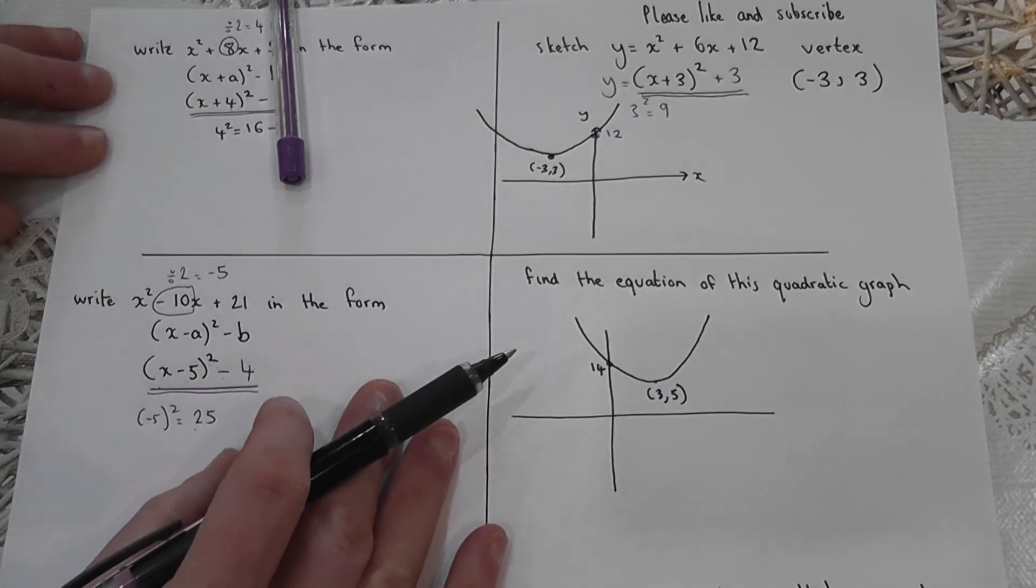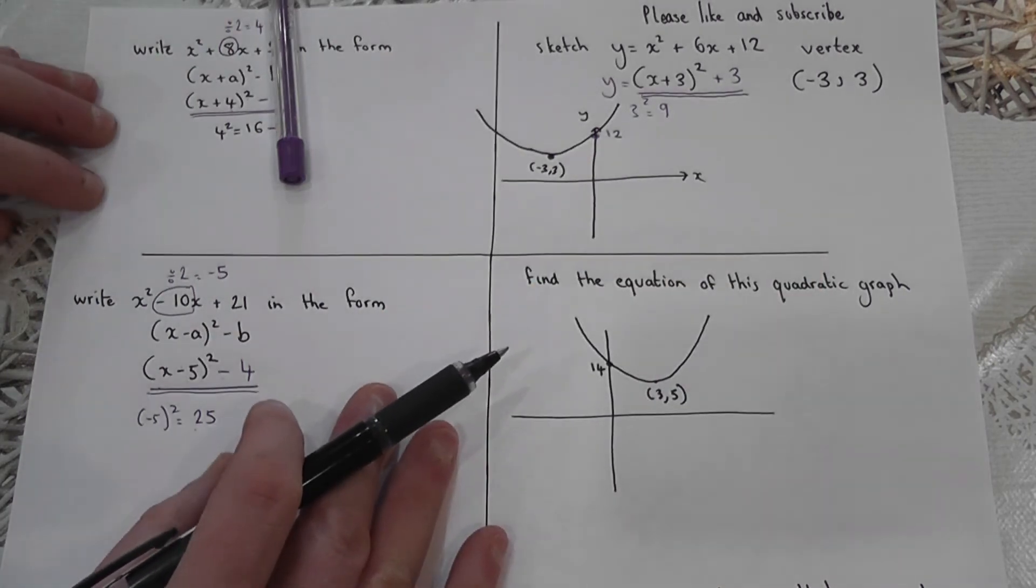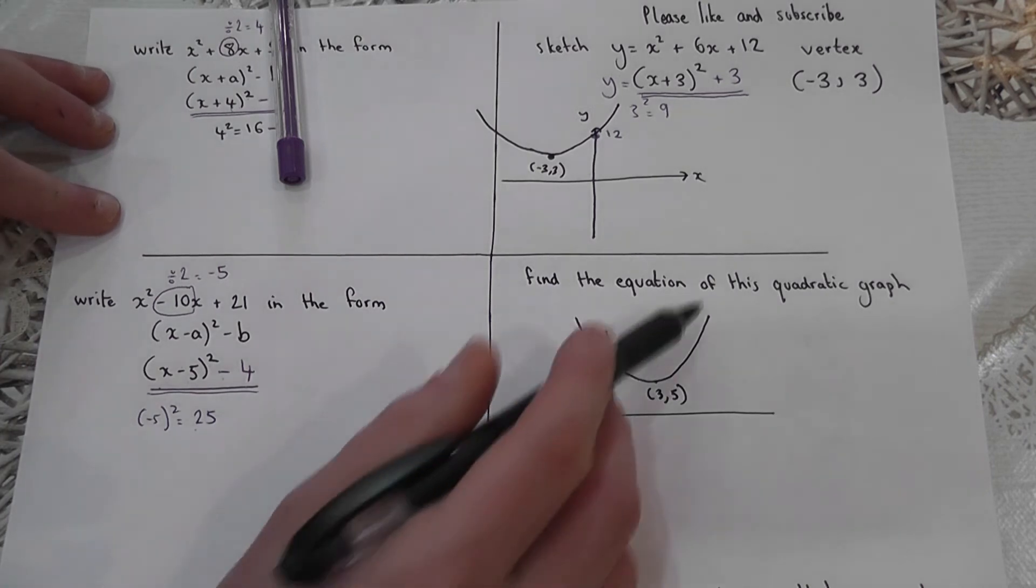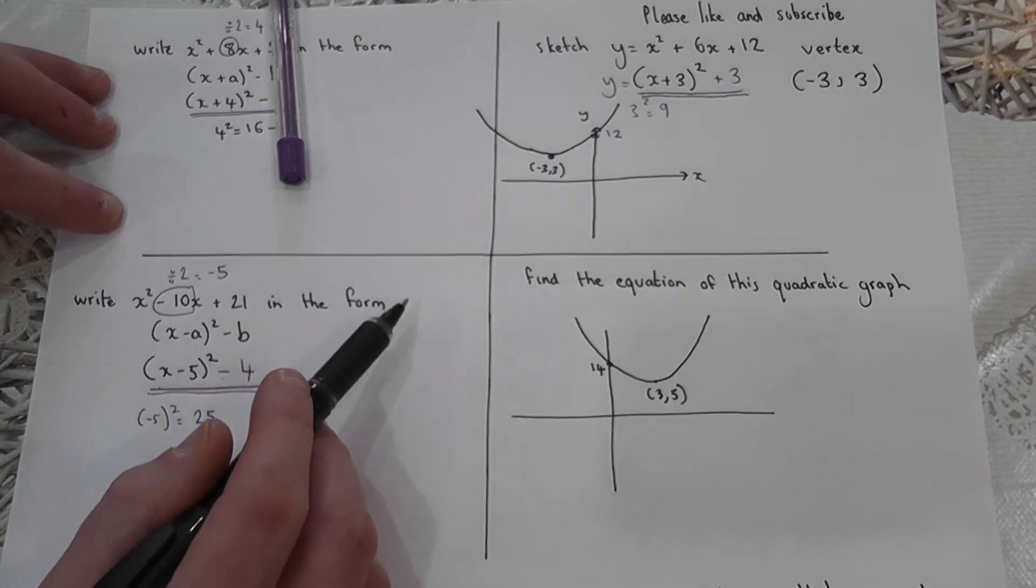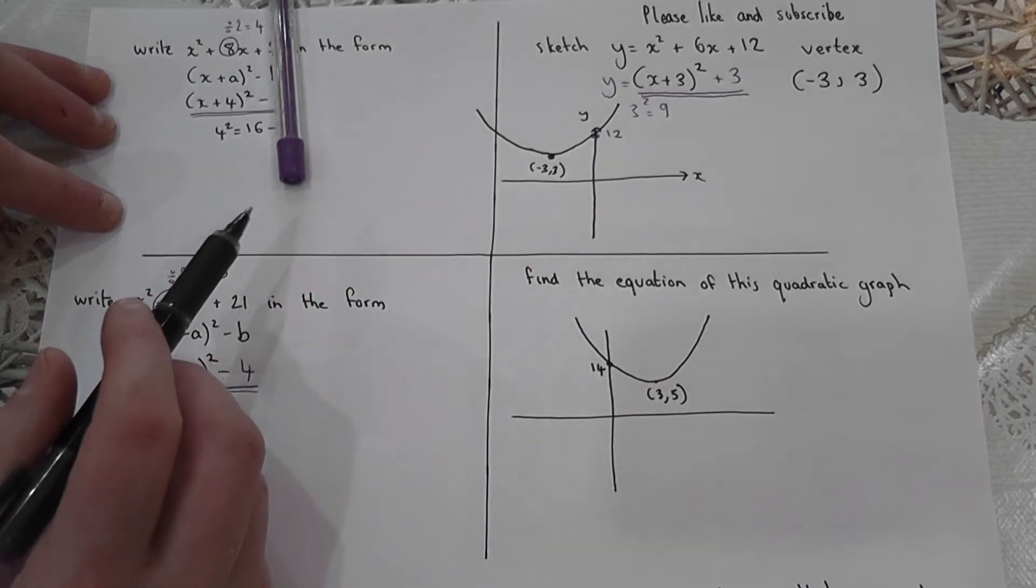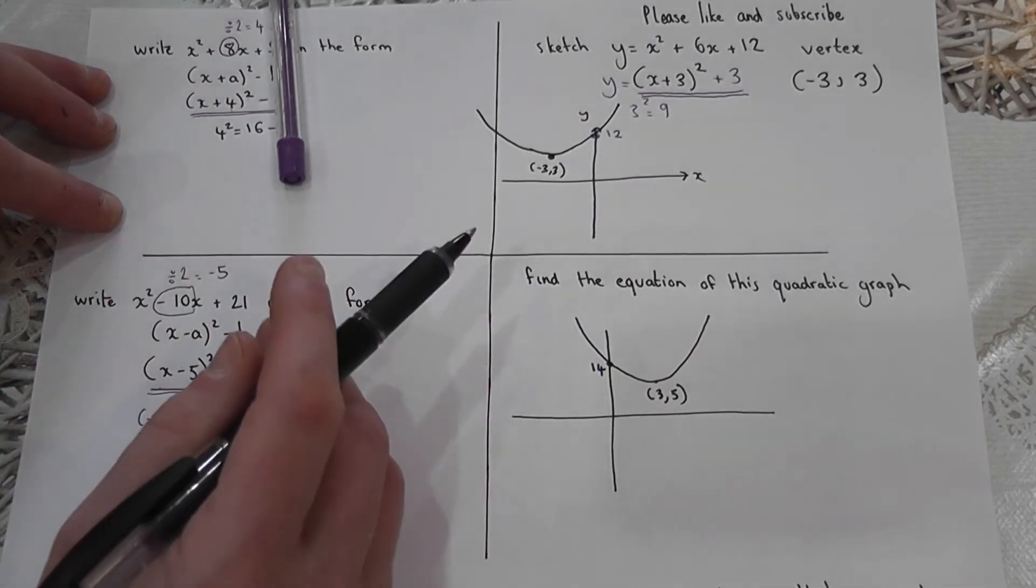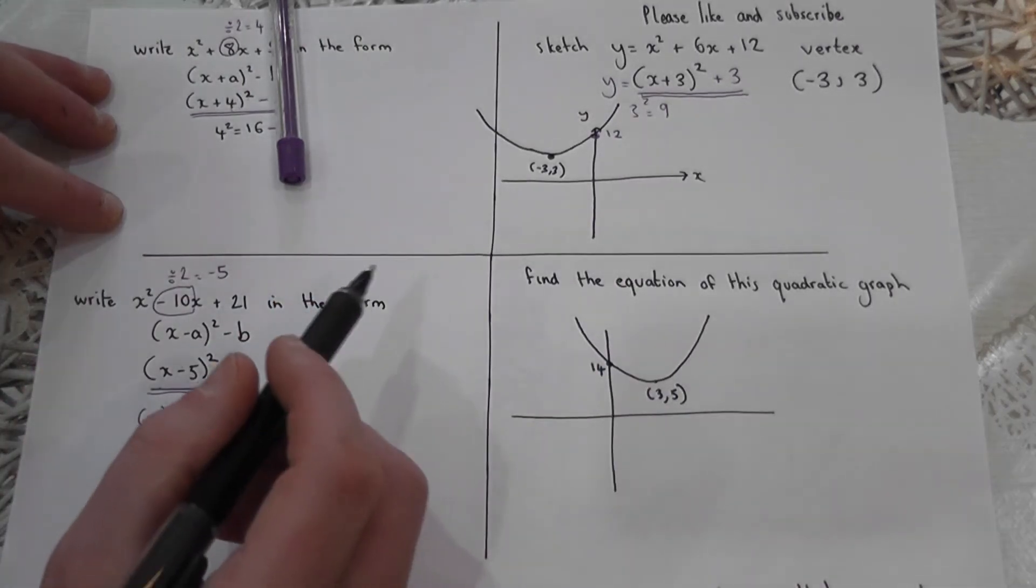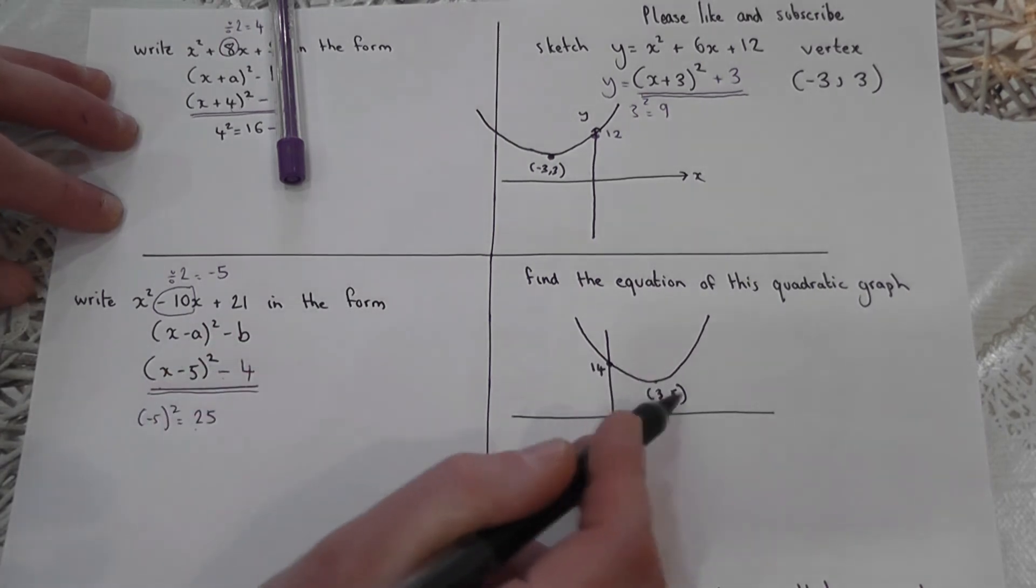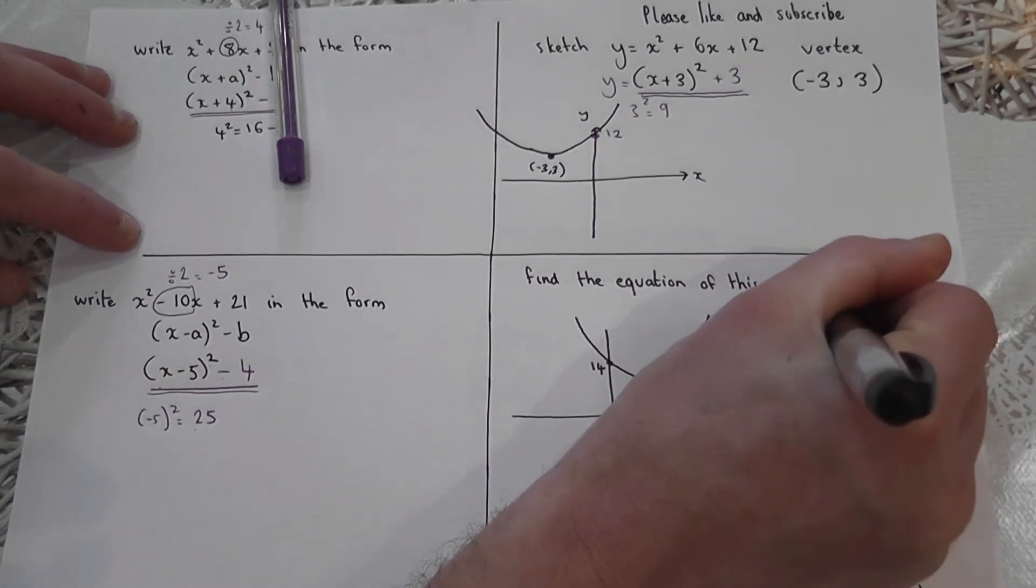Last one. And please don't forget to like and subscribe or ask questions below. If I'm given the graph, I can actually get back to the equation. I can work in reverse. Working in reverse is a very important mathematical skill. So here's what we do. There's the vertex, which is three, five. I can go back to the equation.